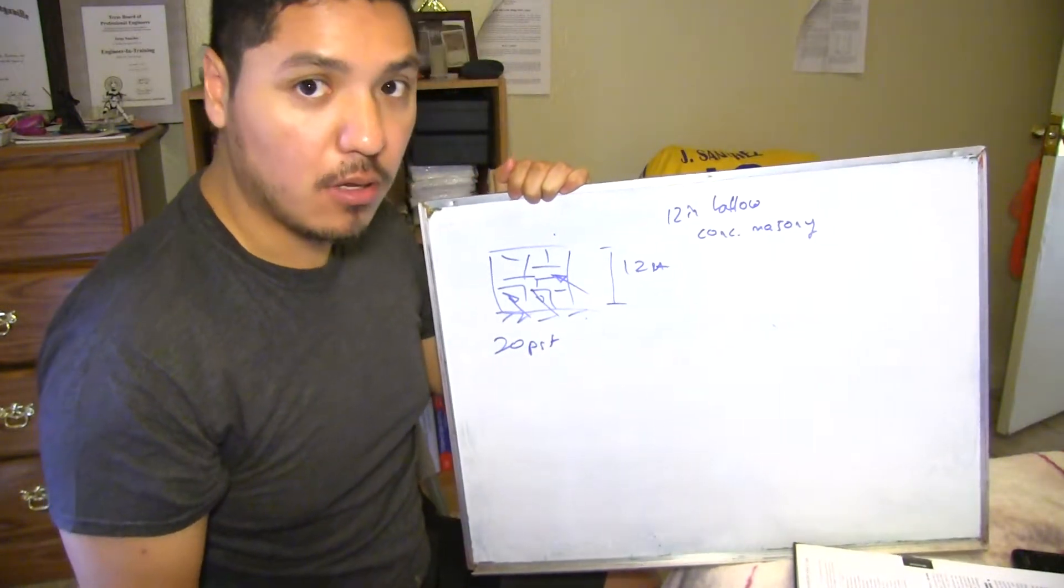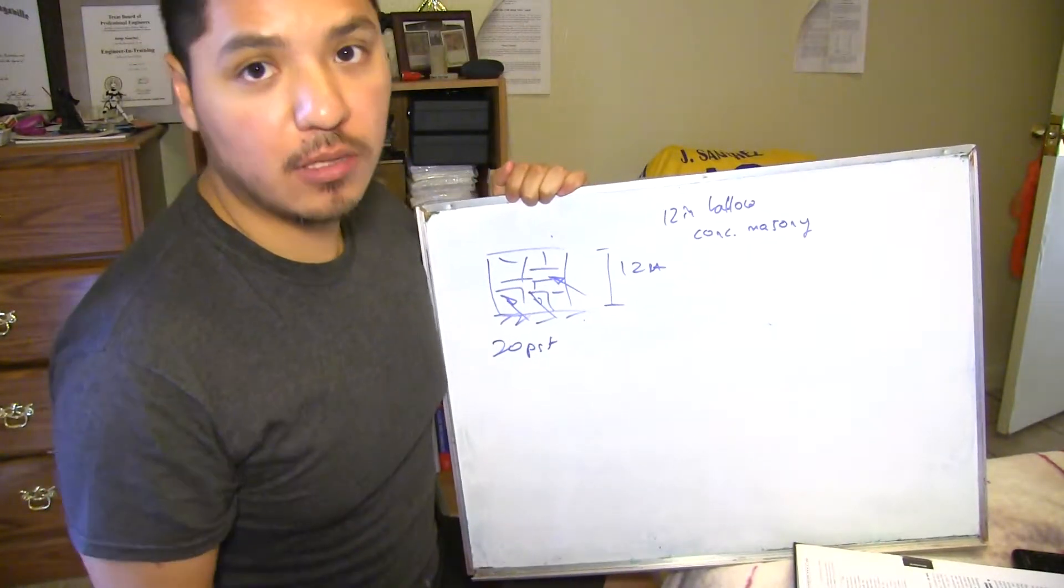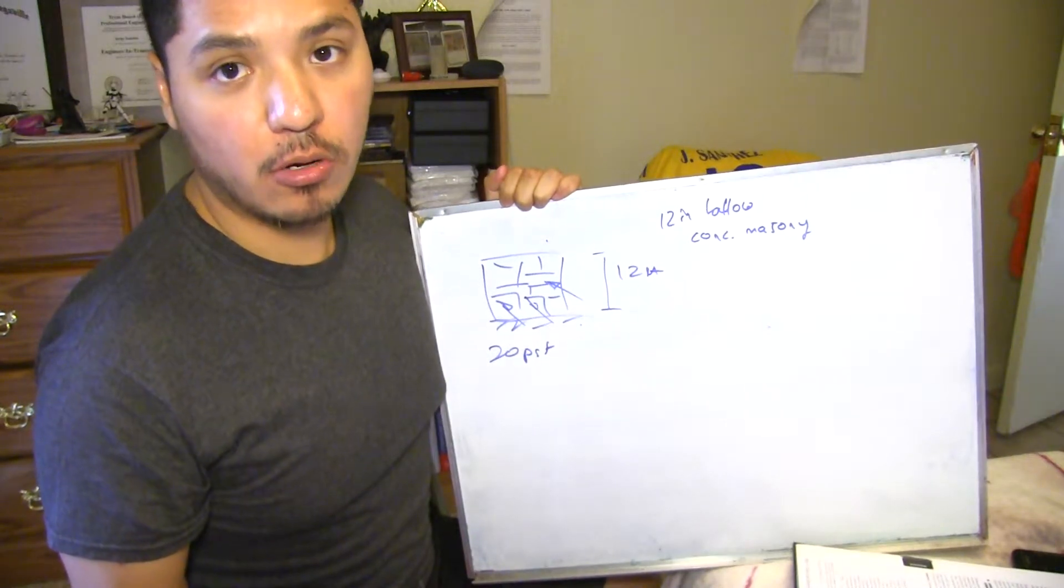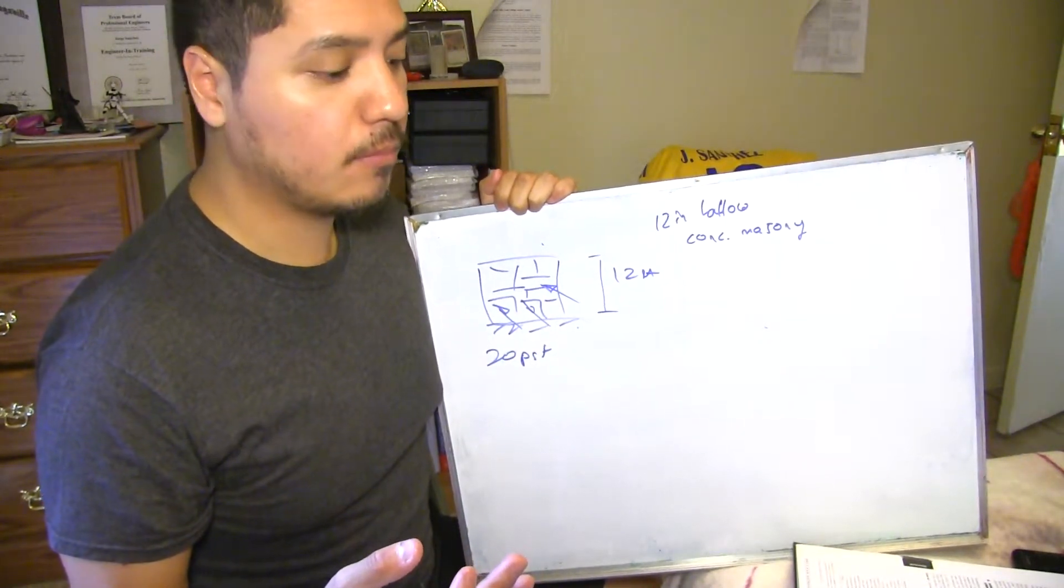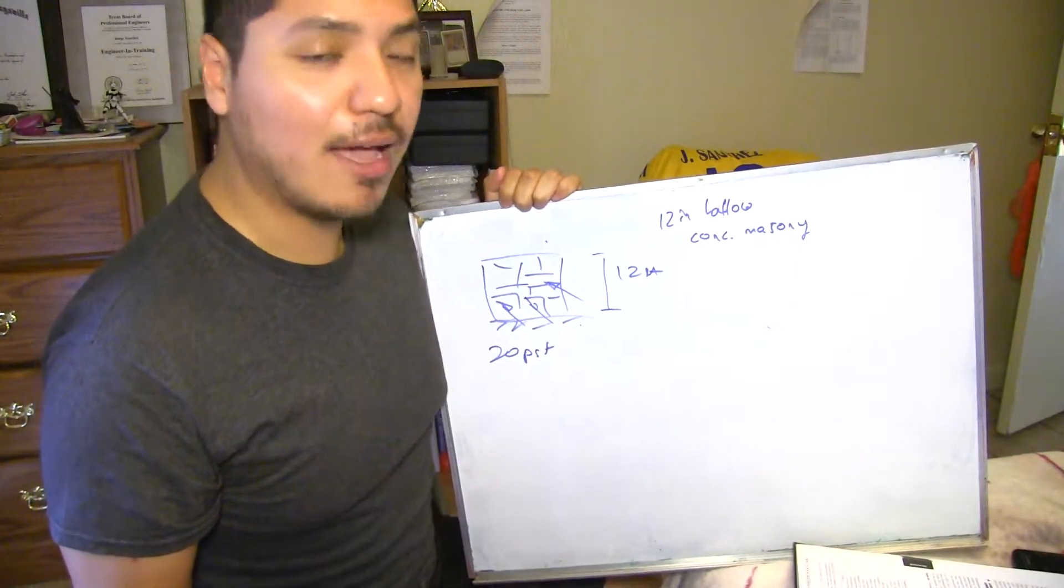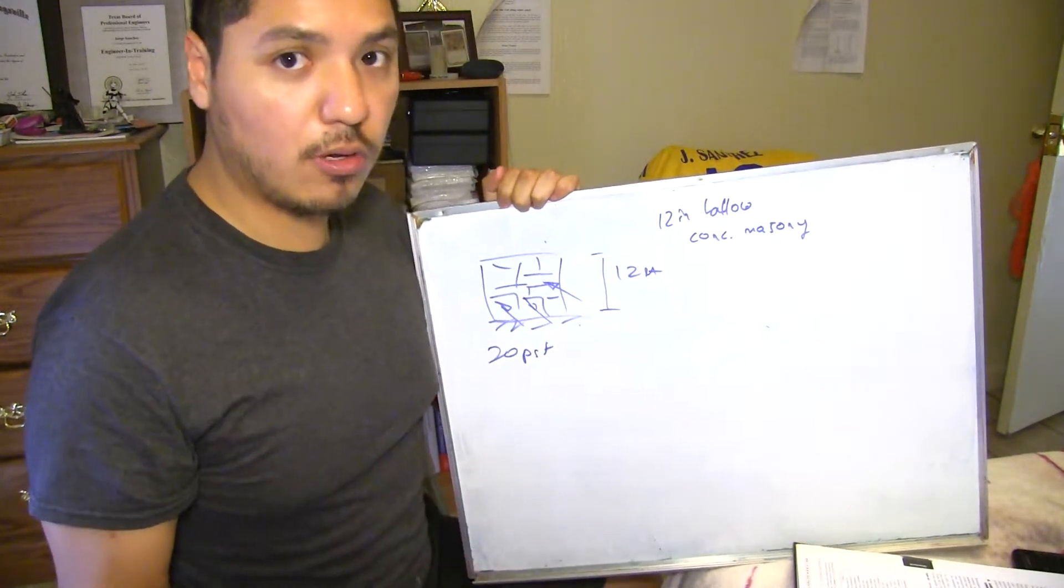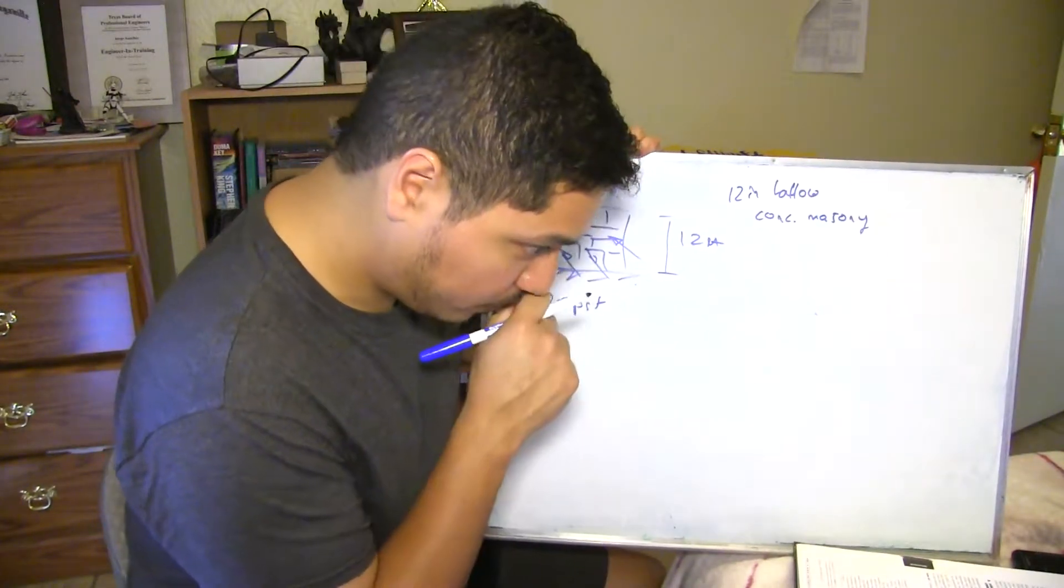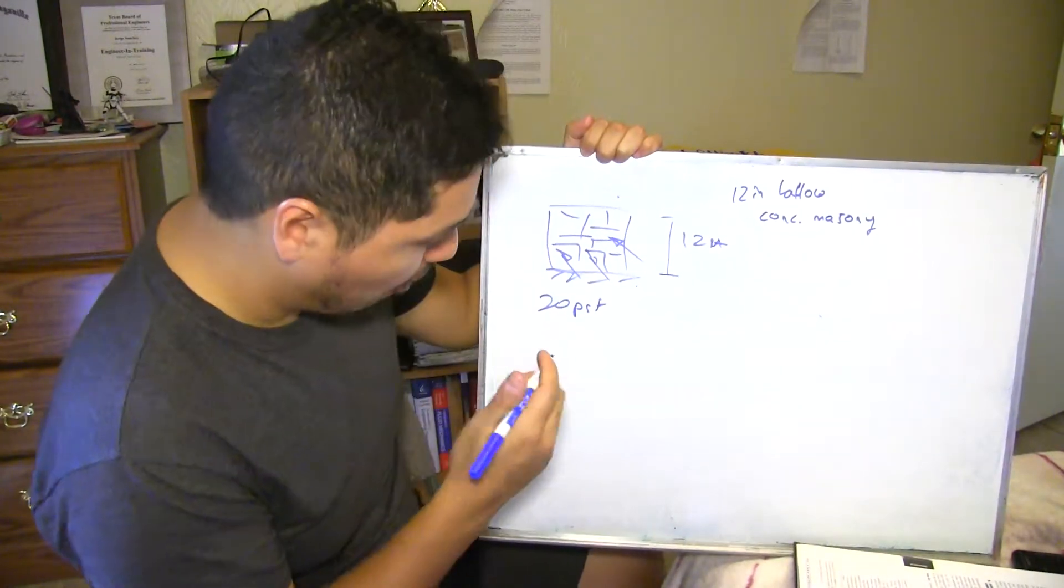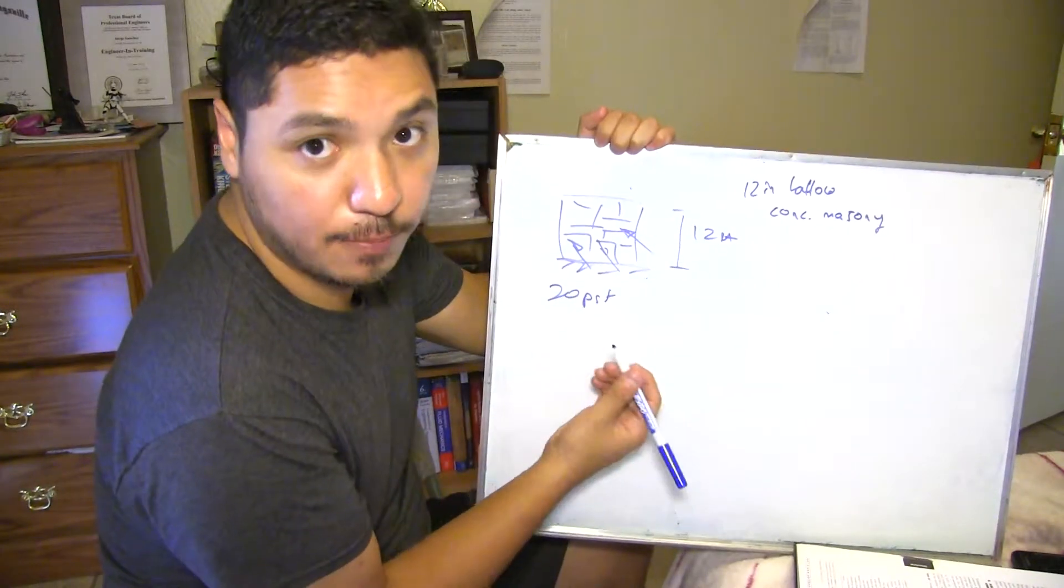And this is pretty simple. What you're going to do is you can Google these tables. I'm pretty sure they're like the masonry code—the Masonry Association Code—they have all these values. So just look for these values. For example, you're going to get your allowable stress that this wall can take for that type of masonry.